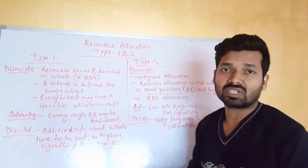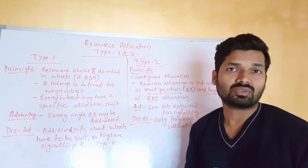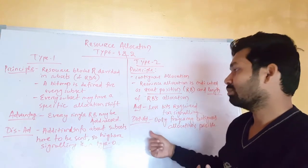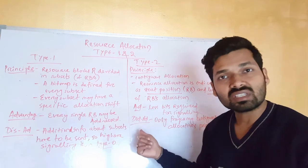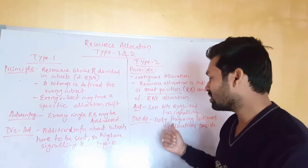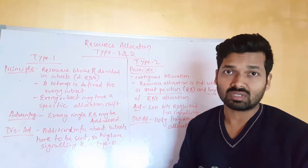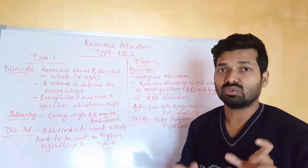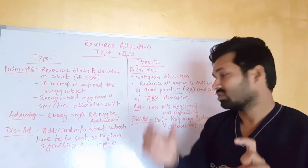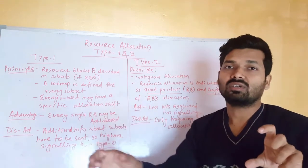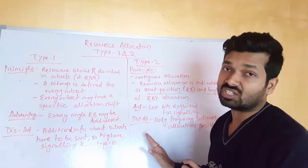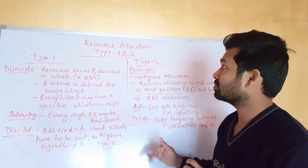The advantage of type 2 is fewer bits required for signaling, so you are saving signaling resources. The disadvantage is that only frequency-continuous allocations are possible, which limits flexibility. This is the key disadvantage of type 2.